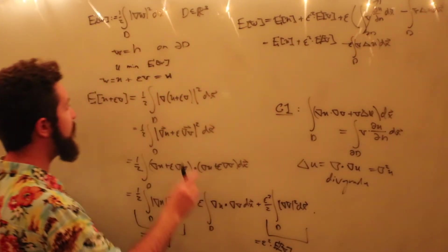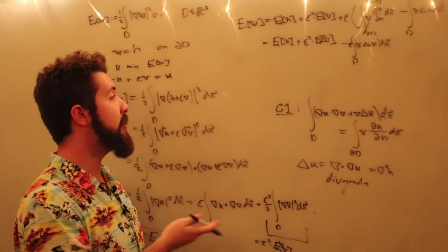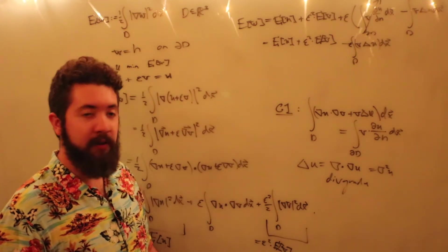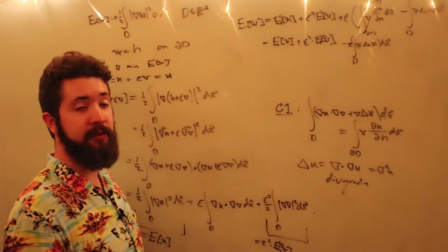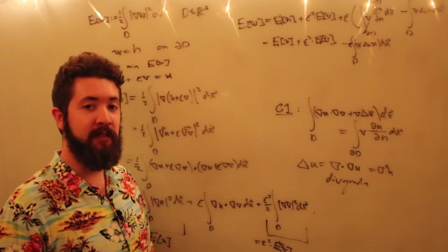Now, we know by supposition that the minimum occurs when epsilon is zero, because u minimizes the energy. However, we also know that by normal calculus, we can take a derivative of this expression with respect to epsilon and set that equal to zero to find our minimum. So let's do that.